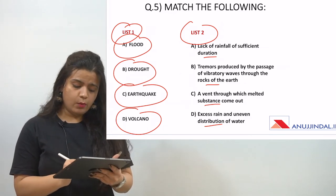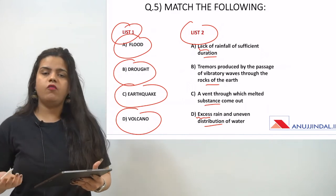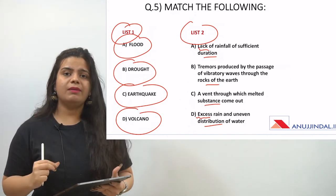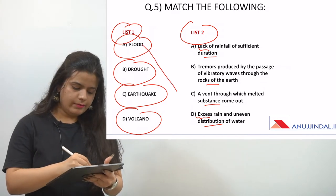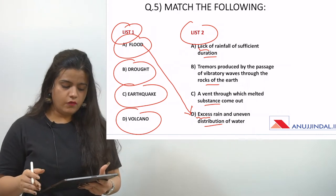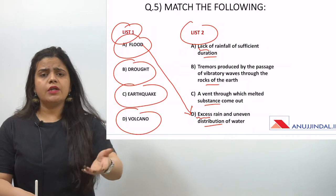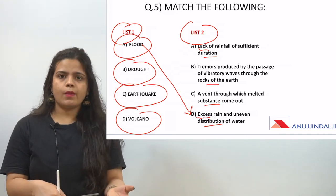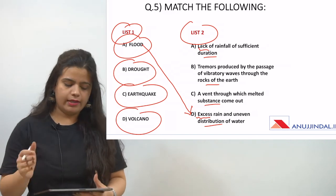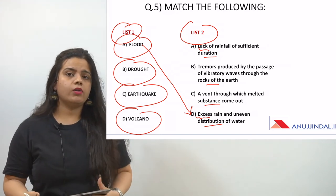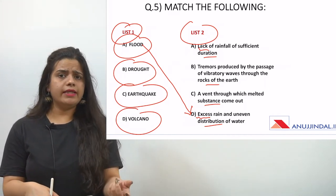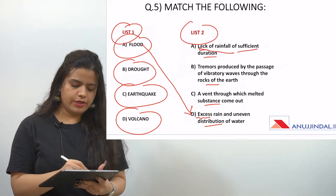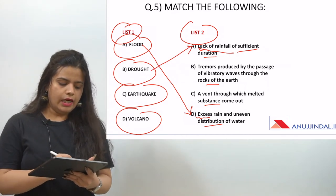One definition uses the word 'excess' and another uses the word 'lack'. For flood, which in Hindi is 'baadh', there is obviously more water — so the answer is 'excess rain and uneven distribution of water'. For drought, the land is dry and water is absent, so the matching definition is 'lack of rainfall of sufficient duration'. Earthquake and volcano take the remaining definitions.